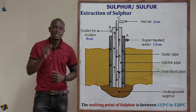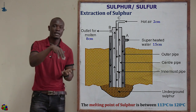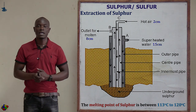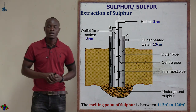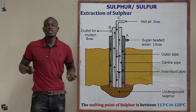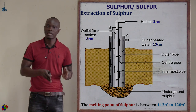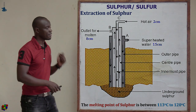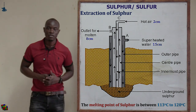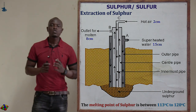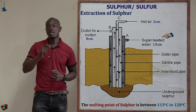The three pipes are drilled underground inside the sulfur deposits. The process takes advantage of the melting point of sulfur, which ranges between 113 and 120 degrees Celsius. For the outermost pipe, superheated water at 170 degrees Celsius and 10 atmospheres is forced down into the sulfur deposits underground.